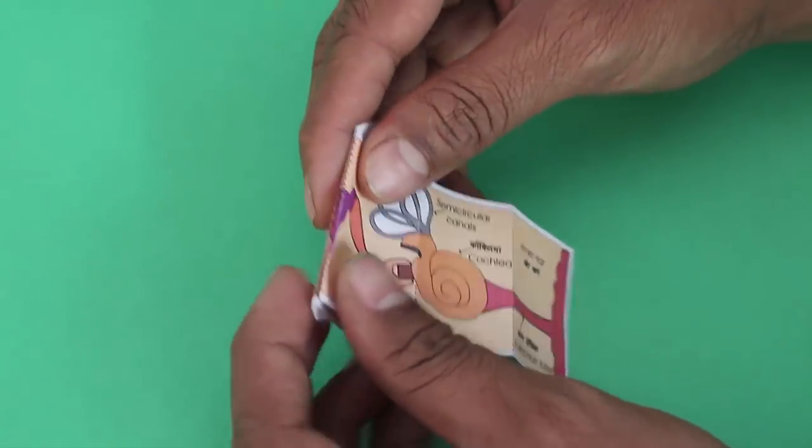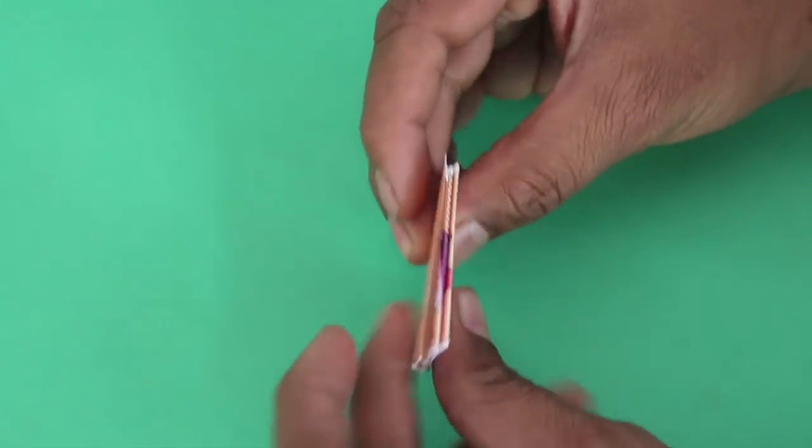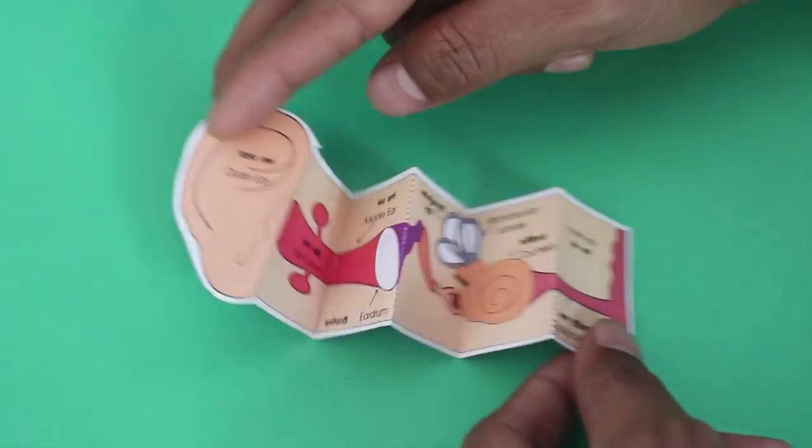The striking of the small bone puts pressure on the fluid inside the cochlea. The purpose of these bones is to amplify the sound inside.